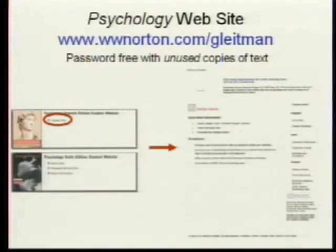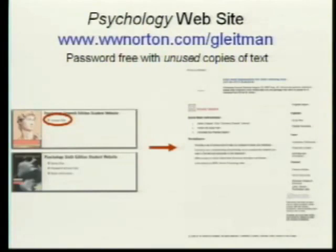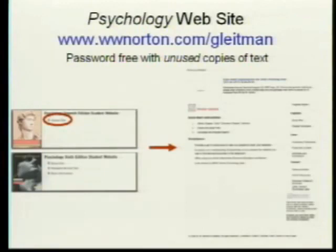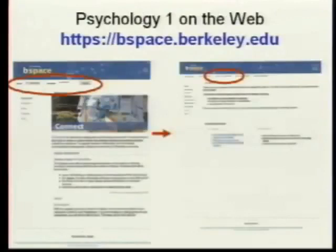Another resource is a website maintained by WW Norton, the publisher of your textbook, with psychology-related news articles, exercises, and little essays on various topics. The URL is in your syllabus. If you buy the text new, you get a password to the Norton website for free; otherwise you can purchase one. The site has lots of useful things for studying, mastery, and enhanced learning.